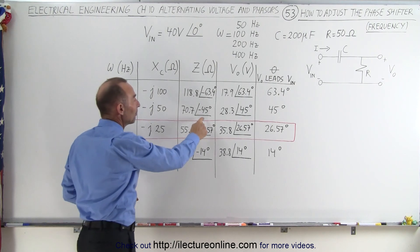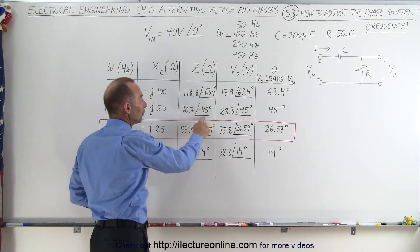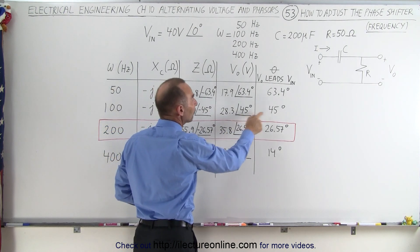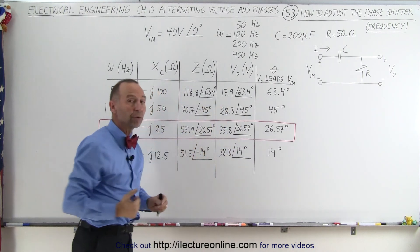We'll get an impedance angle of 45 degrees, which will then result in a phase shift of 45 degrees, but with a much larger drop in the output voltage. It's only about 70% of the original voltage.